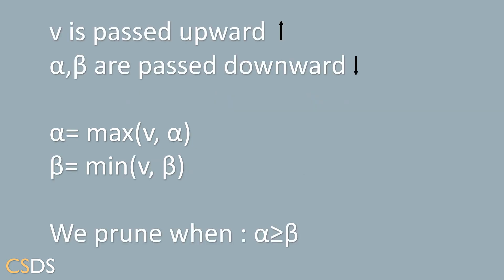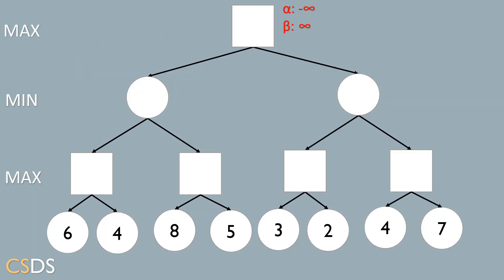Here are the rules for performing the pruning. V is a value which will be passed upward in our minimax tree, and alpha and beta variables will be passed downward. We update alpha as the maximum of v and alpha, and beta as the minimum of v and beta. We prune when alpha is greater than or equal to beta. Alpha and beta are initialized to minus infinity and infinity, and we traverse the tree from left to right.